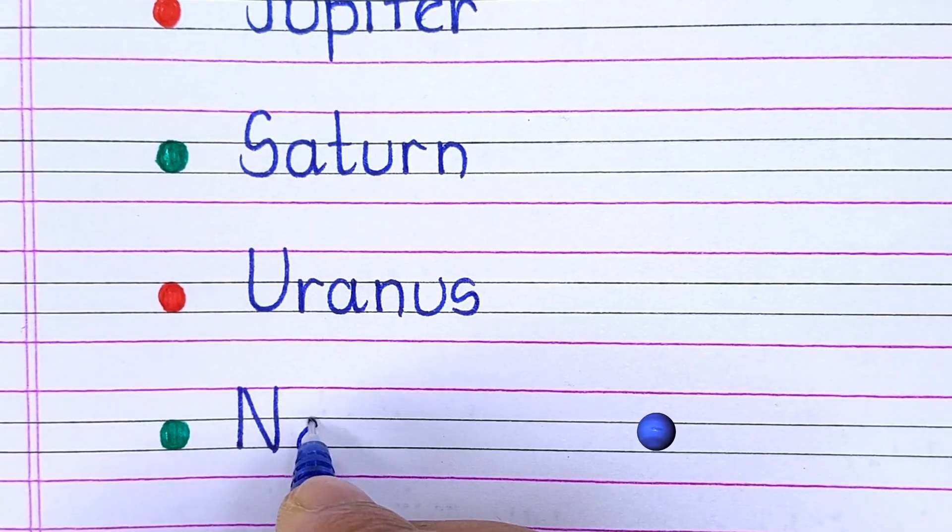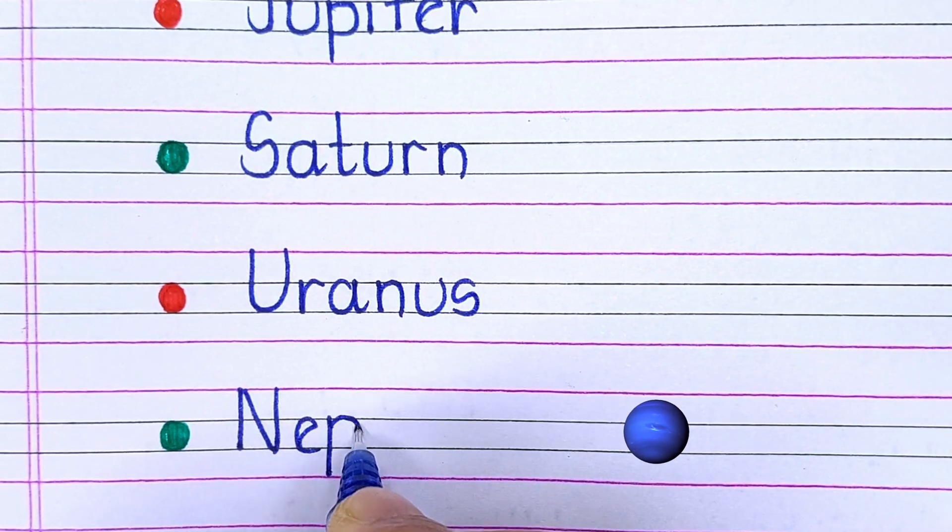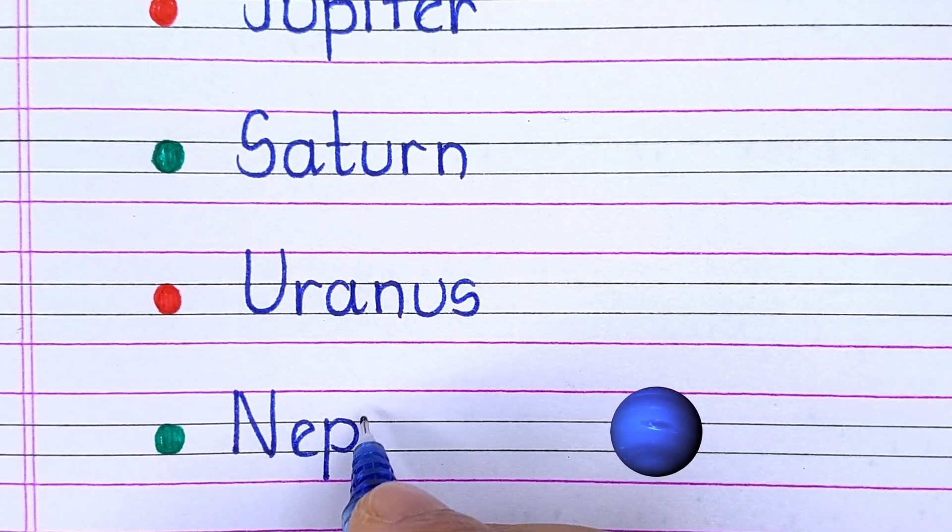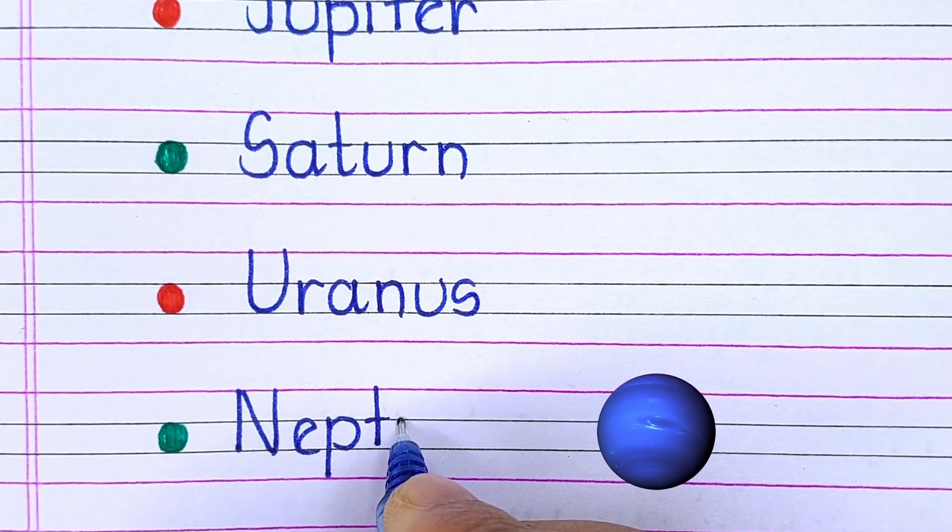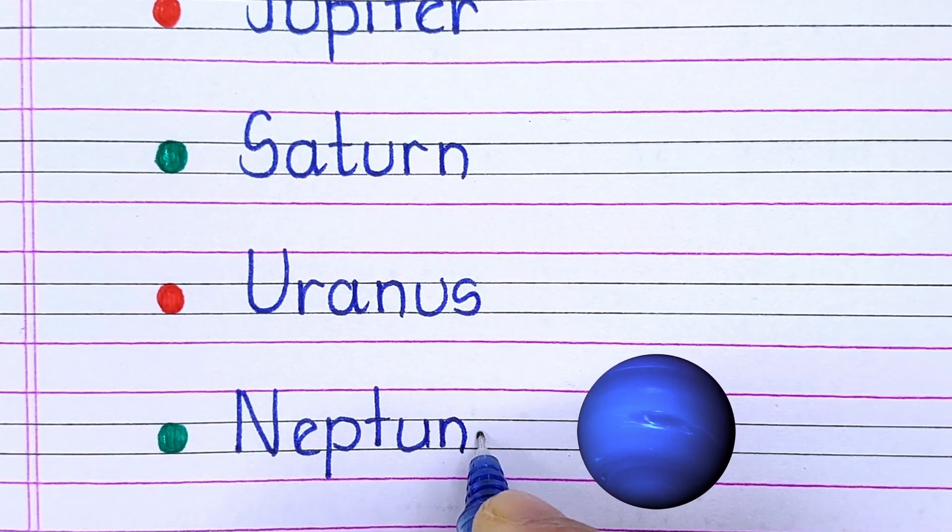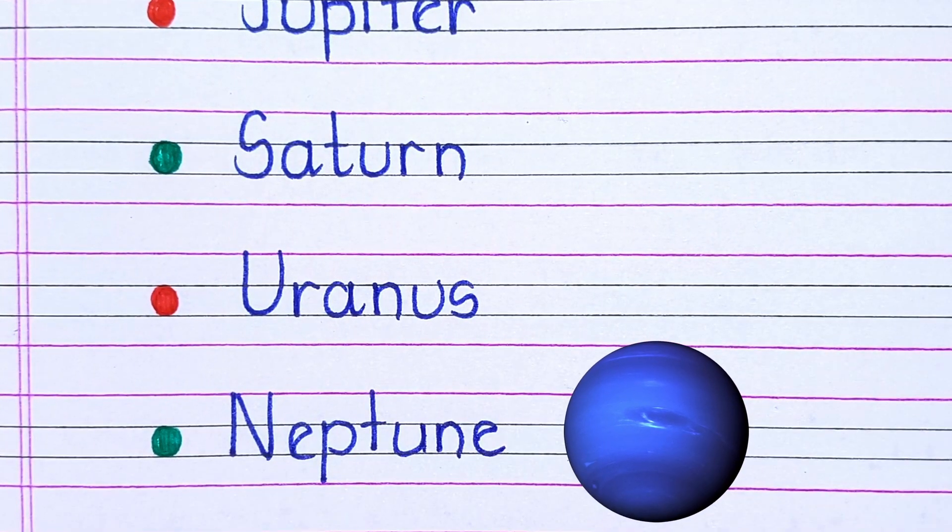The last planet of our solar system is N-E-P-T-U-N-E Neptune